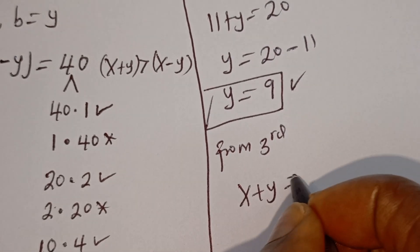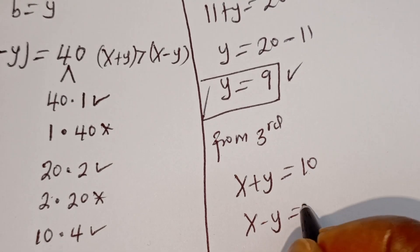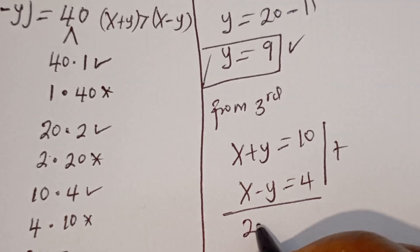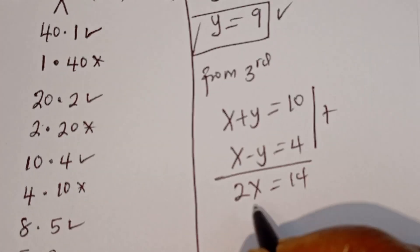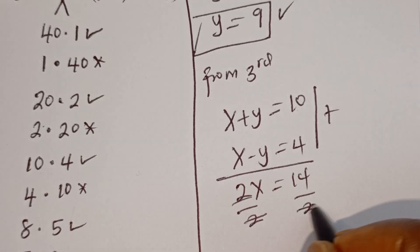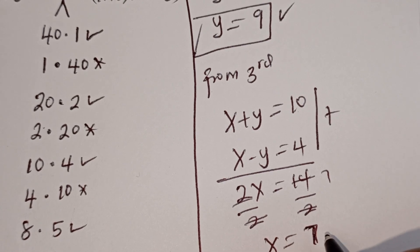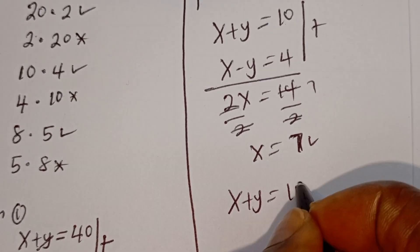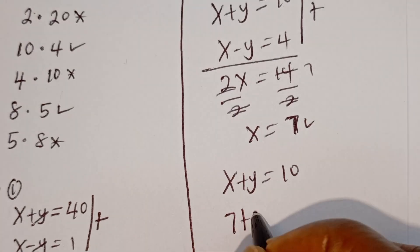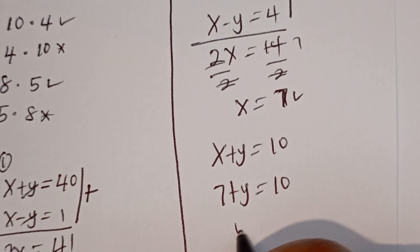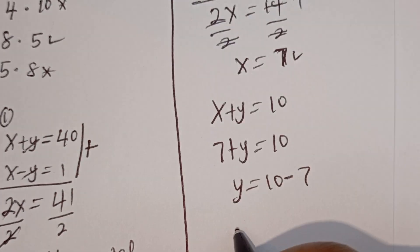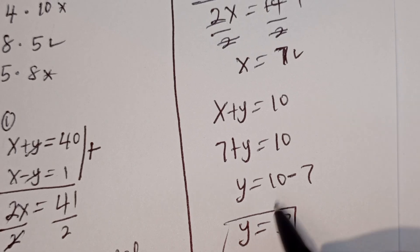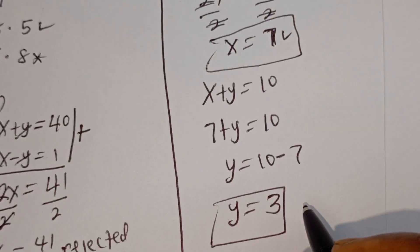For the third case: x plus y equals 10, and x minus y equals 4. Solving simultaneously by adding the two equations, we get 2x equals 14. Dividing by 2, x equals 7. We've got the value of x. From x plus y equals 10, when x is 7, we have 7 plus y equals 10, so y equals 3. Both x and y are natural numbers, so this case is accepted.